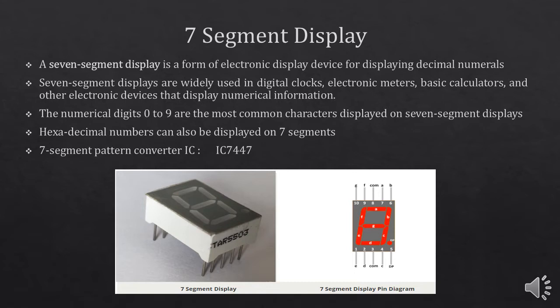0 through 9 are the most commonly used numbers on 7-segment displays. We can also display hexadecimal numbers on the 7-segment. In this lab, you are going to use the 7447 IC for the 7-segment. Here you can see the internal structure of the 7-segment display — it has 8 LEDs and a dot LED as well.